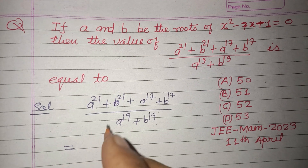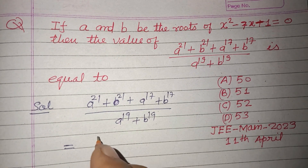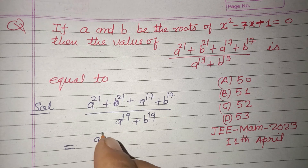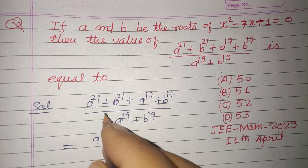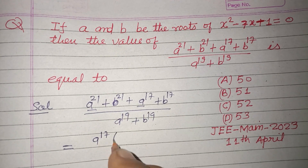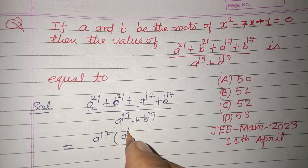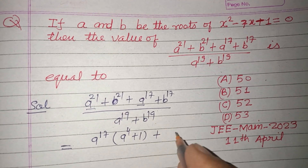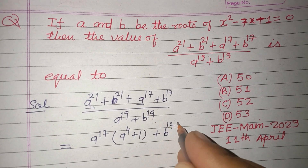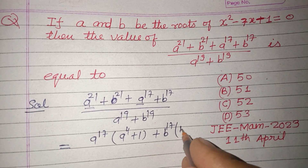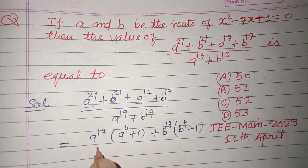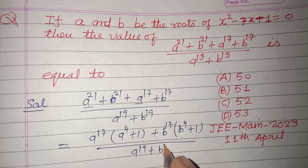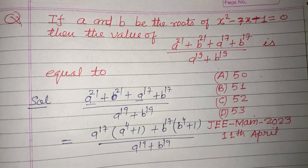In the numerator, a¹⁷ is common from a²¹ and a¹⁷, giving a¹⁷(a⁴ + 1). Similarly, b¹⁷ is common, giving b¹⁷(b⁴ + 1). So the expression becomes [a¹⁷(a⁴ + 1) + b¹⁷(b⁴ + 1)] over (a¹⁹ + b¹⁹).